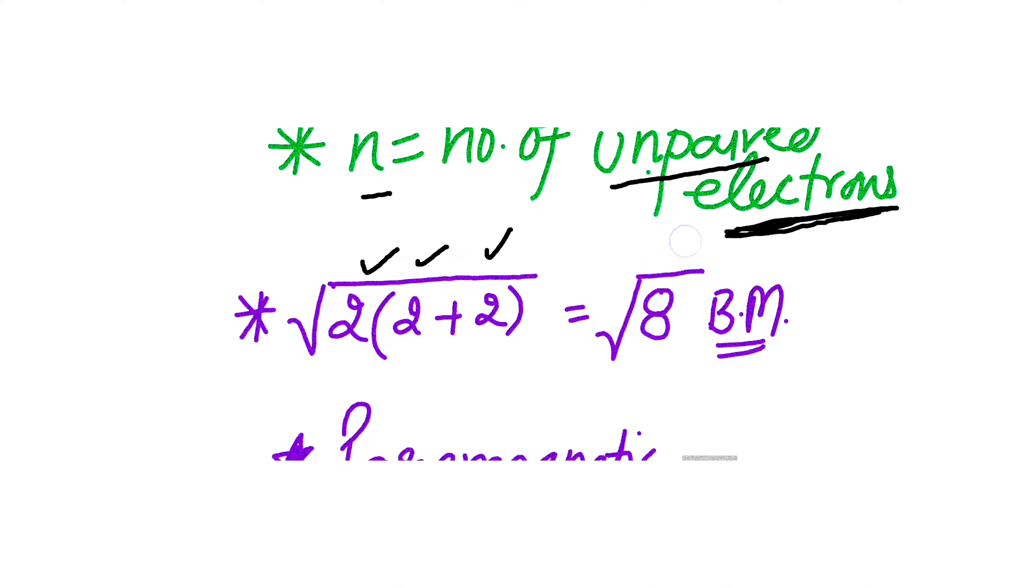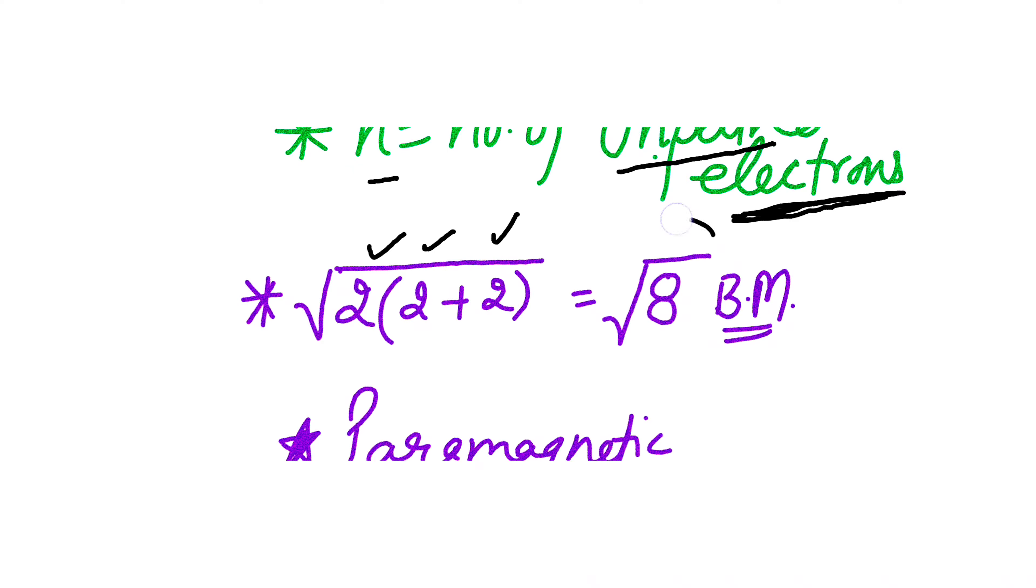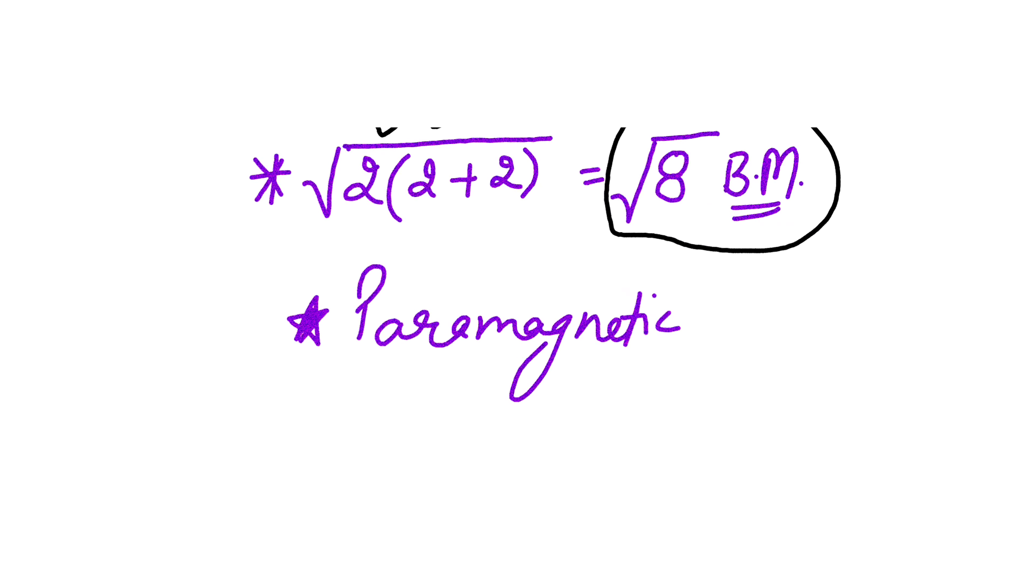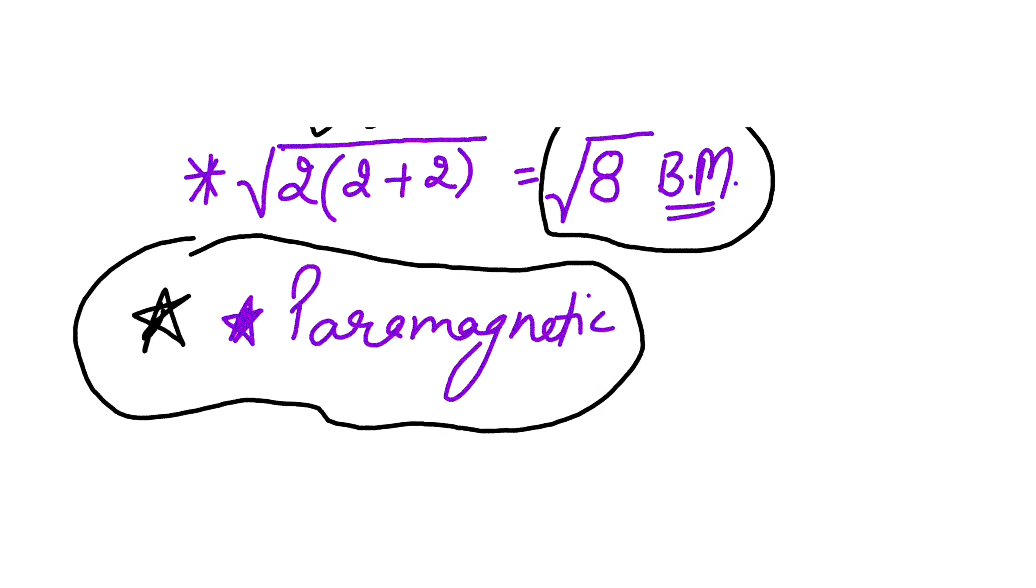So its magnetic moment will be equal to under root of 8 Bohr magneton. Now let's determine whether this complex is paramagnetic or diamagnetic. If we see the definition of a paramagnetic compound, we know that if a compound contains unpaired electrons, then we say it is a paramagnetic species.